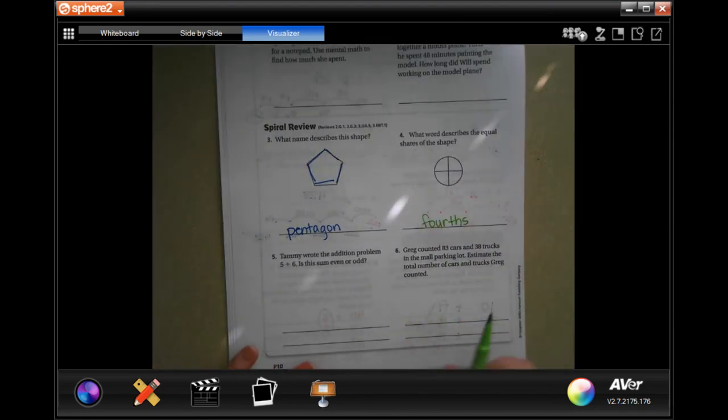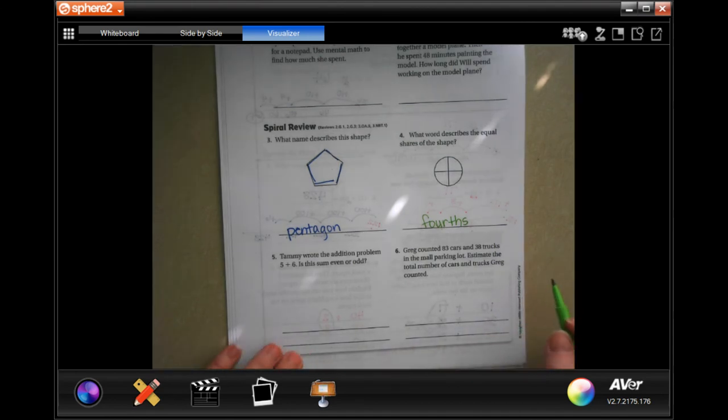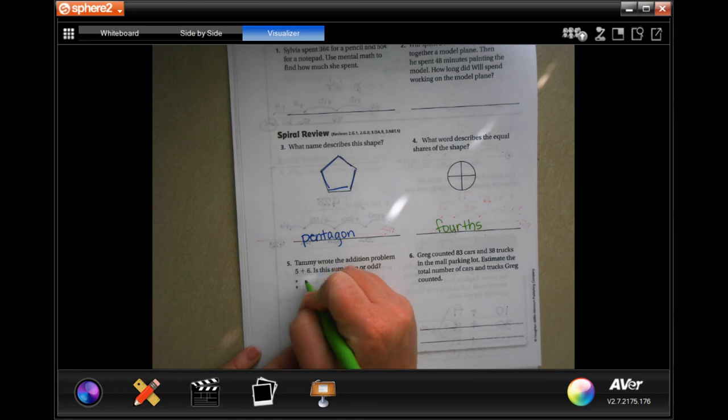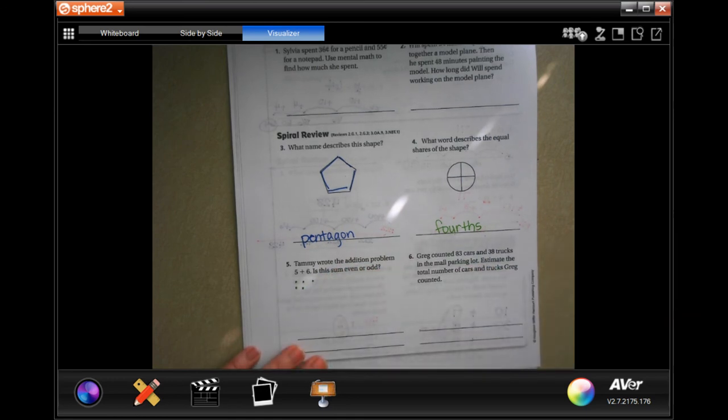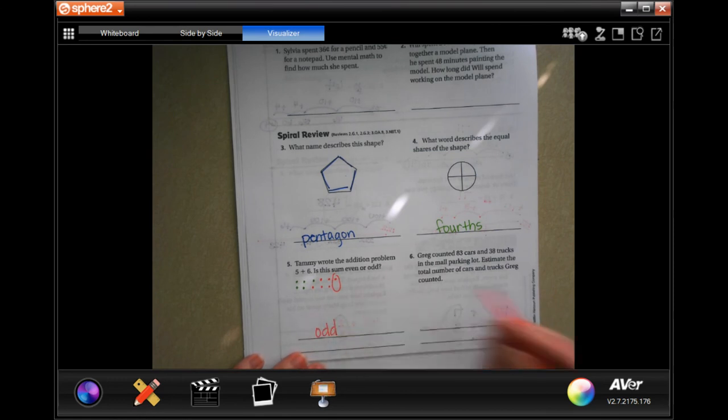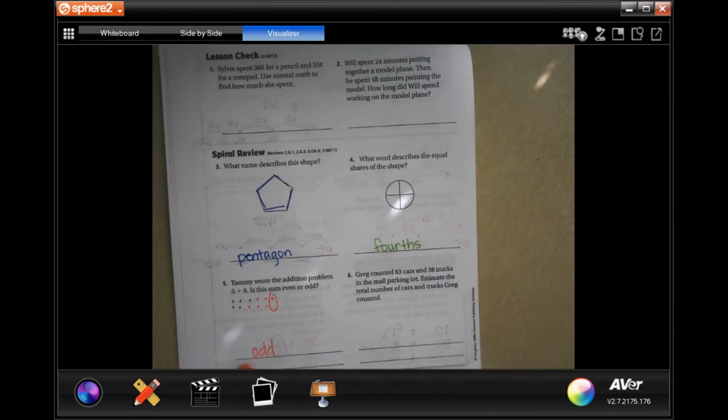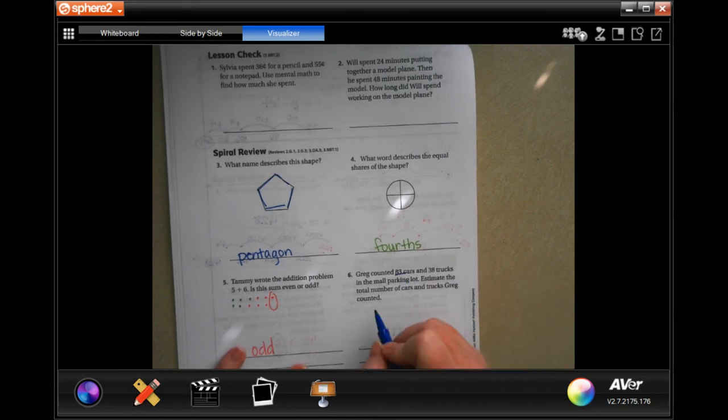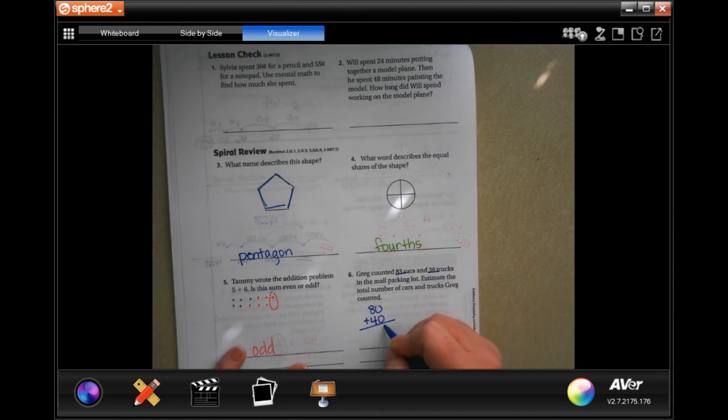Tammy wrote the addition problem 5 plus 6. Is this sum even or odd? So let's try it. 1, 2, 3, 4, 5. And 1, 2, 3, 4, 5, 6. Well, I have an opening there. That makes it odd. And Greg counted 83 cars and 38 trucks in the mall parking lot. Estimate the number of cars and trucks Greg counted. Well, 83 rounds to 80 and 38 rounds to 40. Add those up. 0, 12, 120 cars and trucks.